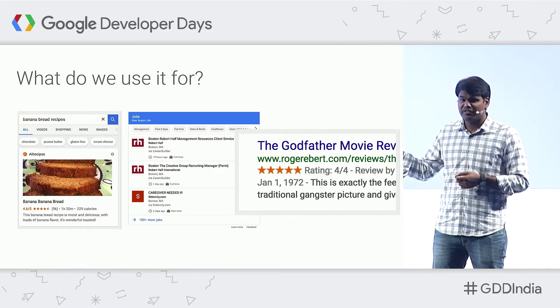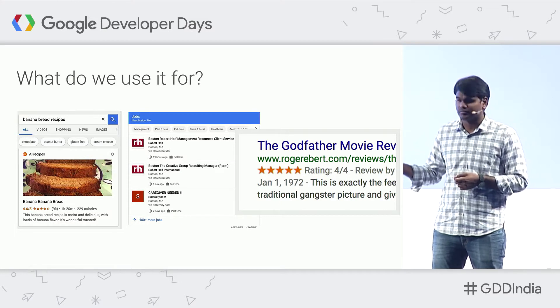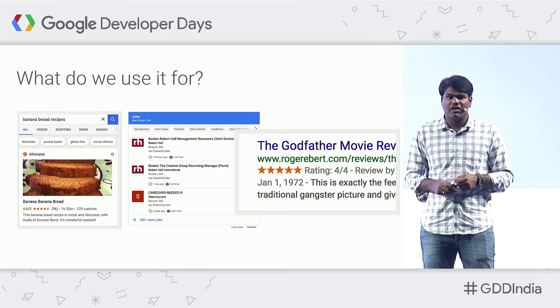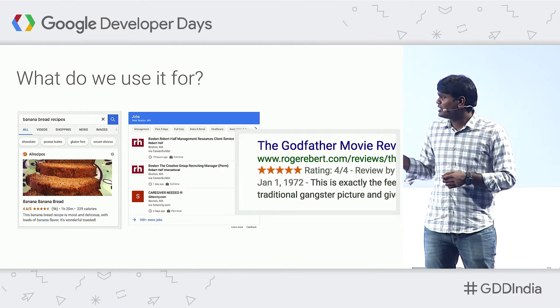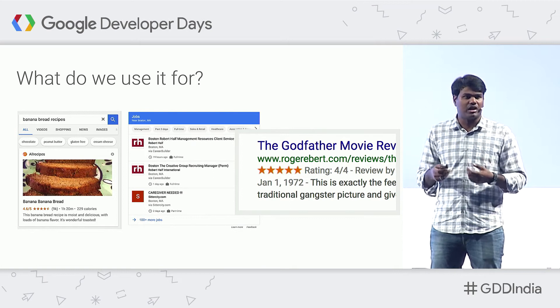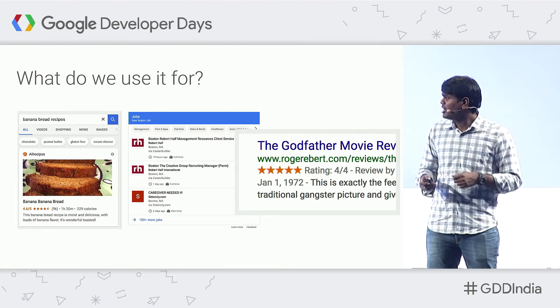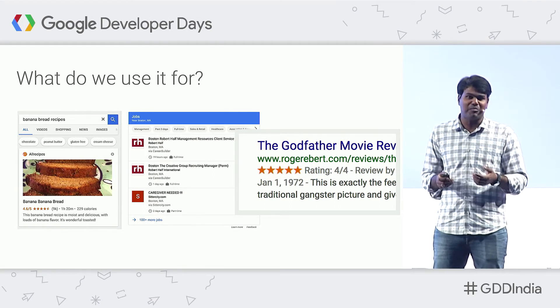Here we have three different search features. On the left screenshot, we have a rich card for banana bread recipes. Because the webmaster has marked up using structured data, we're able to provide a good image of what the banana bread will look like, tell users it takes one hour and 20 minutes to make, and that you consume 229 calories per serving.